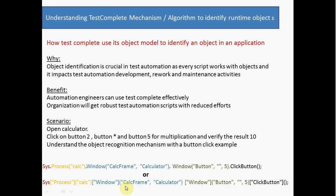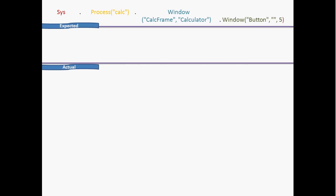The above one is a VBScript recording and the below one is a C# kind of script recording. A small portion has been taken for demonstration purposes — this is what TestComplete uses for expected object recognition.